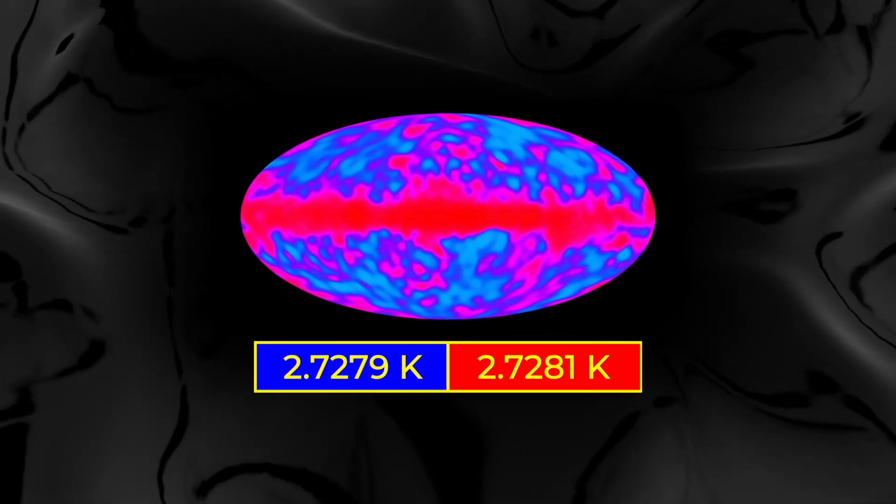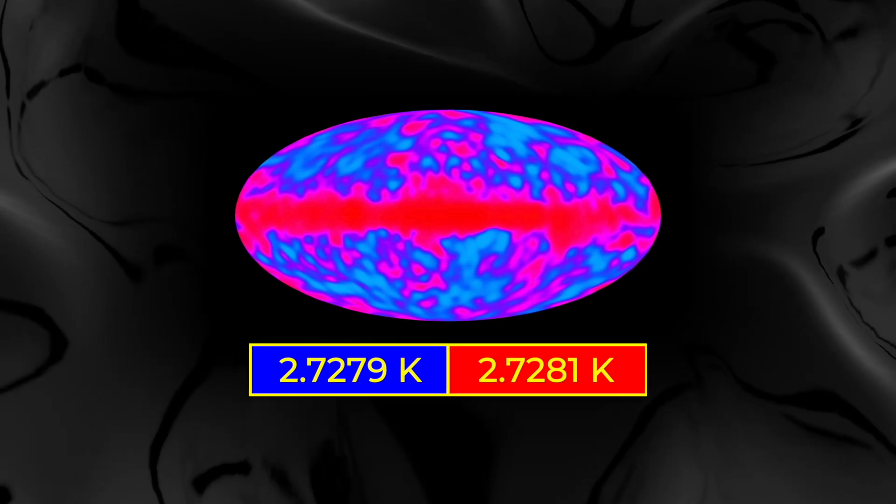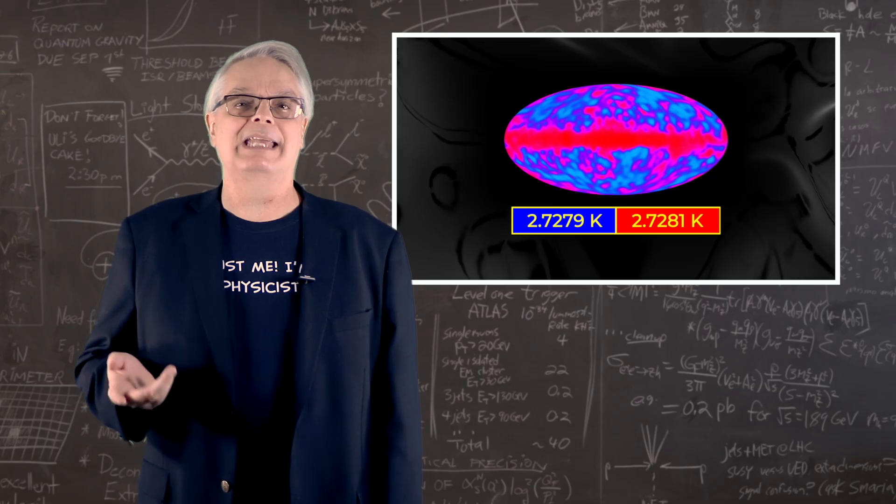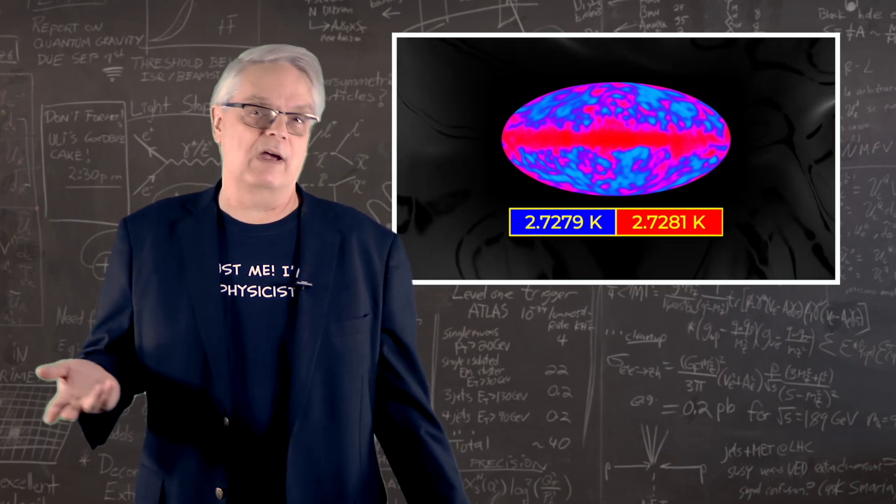And we see this red stripe across the equator. That red stripe is caused by microwaves emitted by gas in the Milky Way, and we have to subtract that off, too.